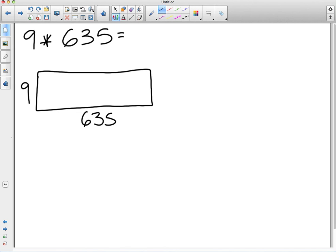Good. Why would we split the 635 up? So it could be easier to multiply. Great. How would you like to split up 635? So I would like to split it up to 600, and then on the other side, 35.